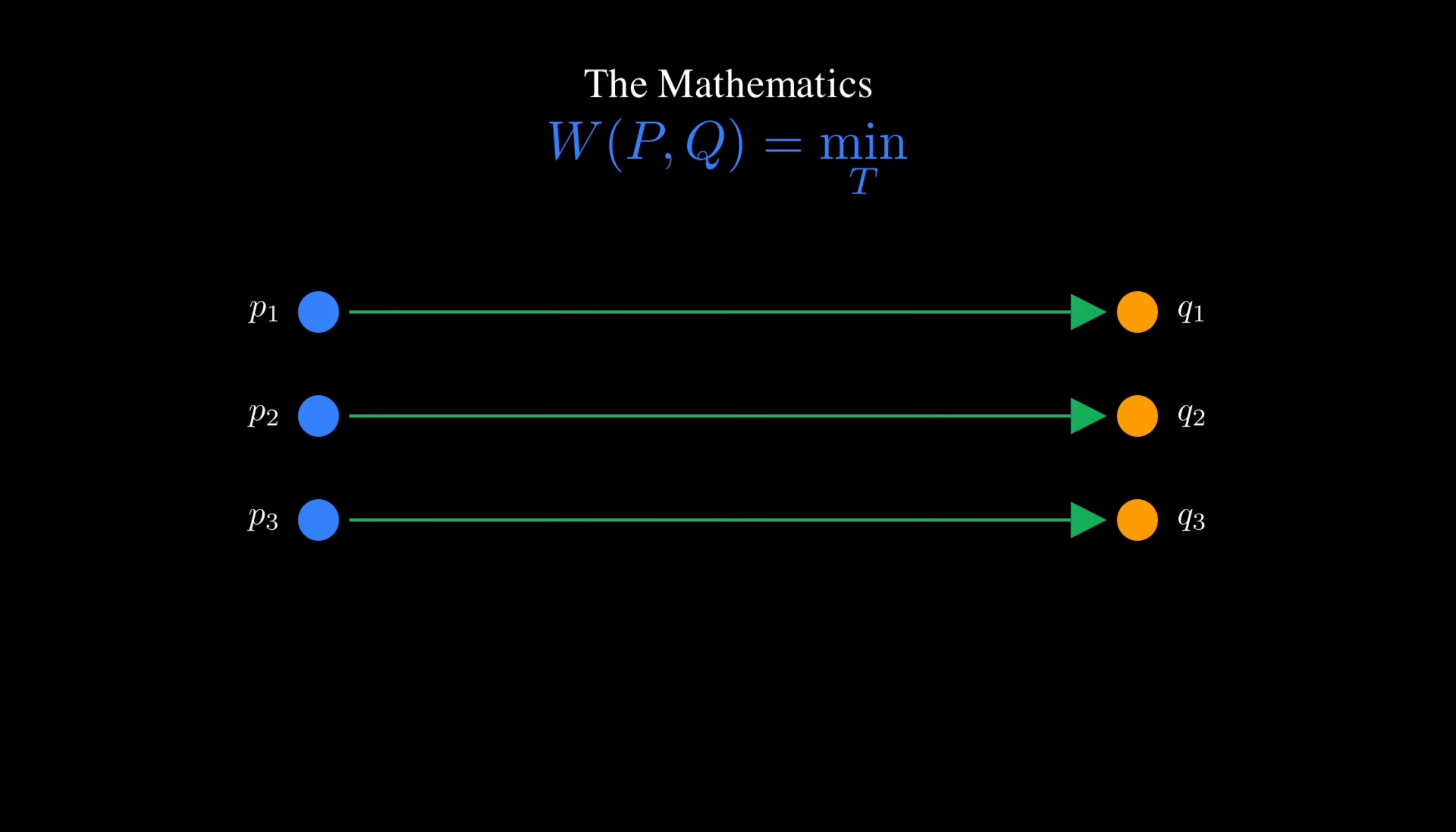Let's make this precise. The Wasserstein distance is defined as the minimum total transport cost. A transport plan T tells us how to move mass. Each entry TIJ represents the amount of mass moving from location I to location J.